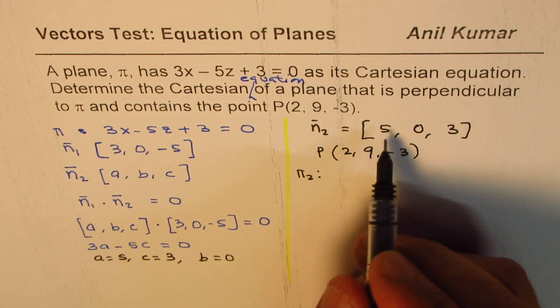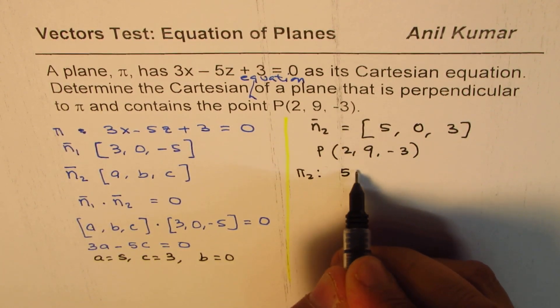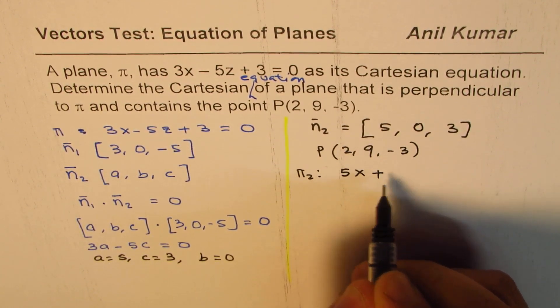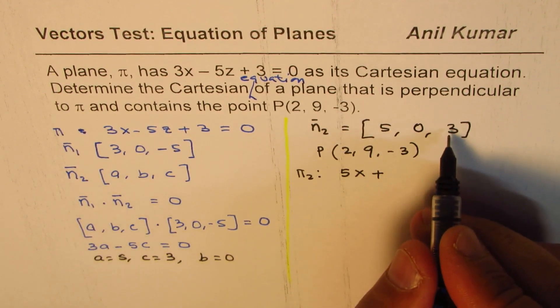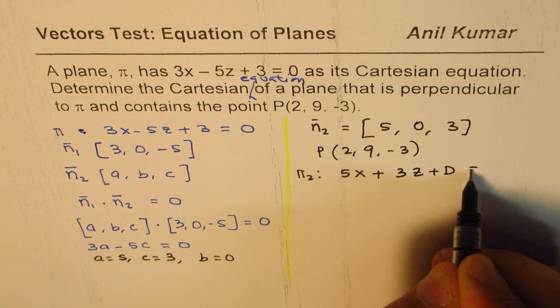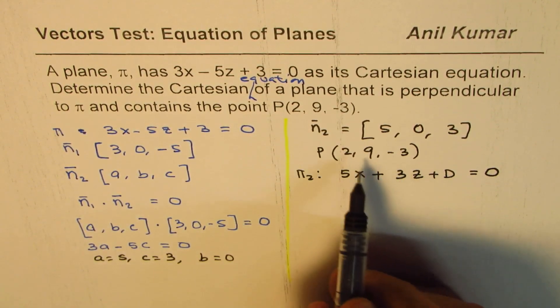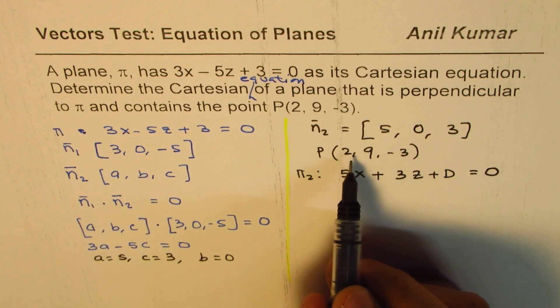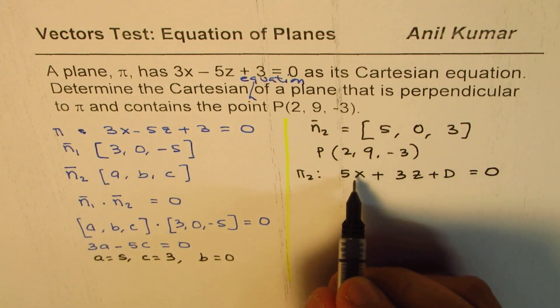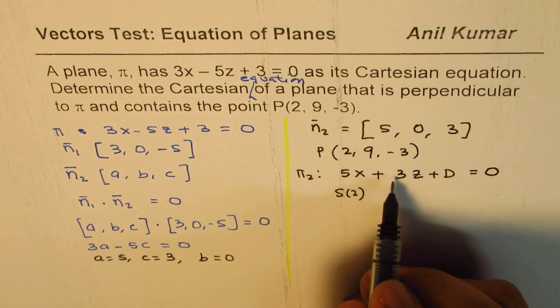The equation π₂ will be 5x + 0y + 3z + d = 0. To find d we can substitute these points: 2 for x, 9 for y, and -3 for z.